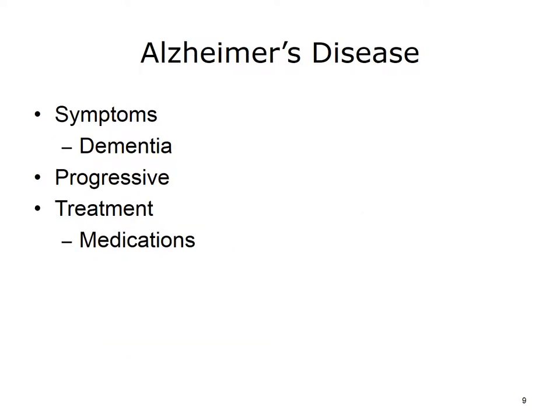Let's move on to the various disorders and diseases of the brain. Dementia is a brain disorder that seriously affects a person's ability to carry out daily activities. Alzheimer's disease is the most common form of dementia among older people. Alzheimer's begins slowly by first involving the parts of the brain that control thought, memory, and language. Over time, symptoms get worse.